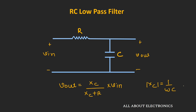At lower frequencies, the reactance of the capacitor will be much larger, so the output will be approximately equal to the input. At higher frequencies, the value of the capacitor reactance will reduce, and hence the output will also reduce. At very high frequencies, the output will tend to zero. In this way, this circuit acts as a low-pass filter, passing low-frequency components and rejecting higher-frequency components.